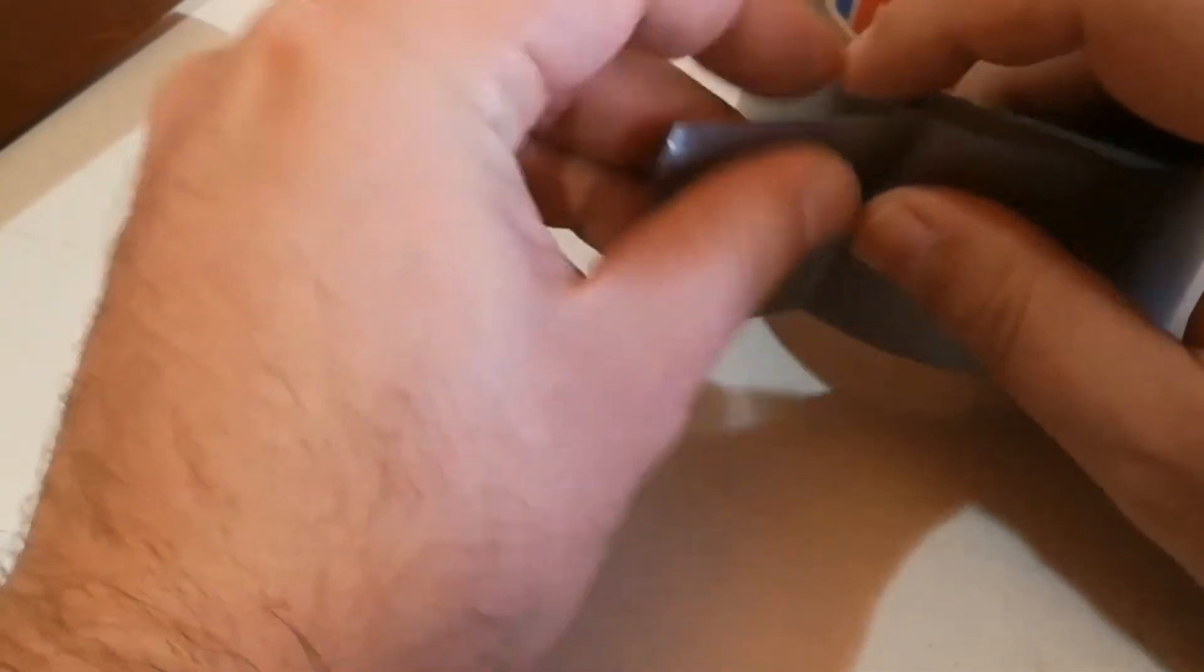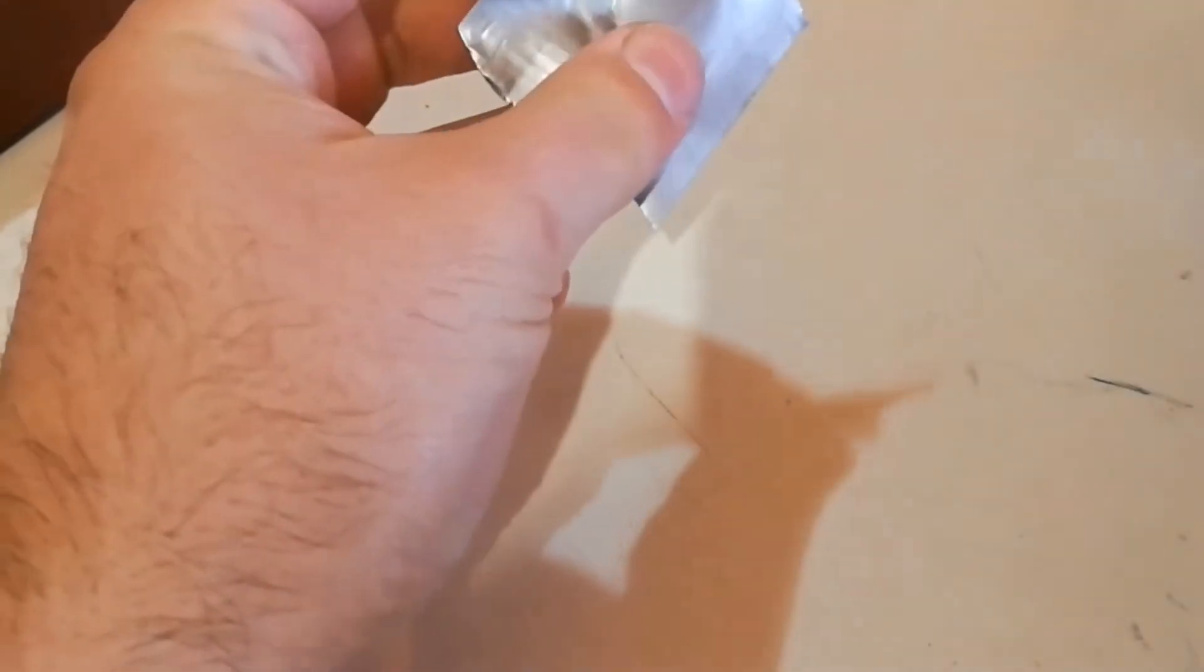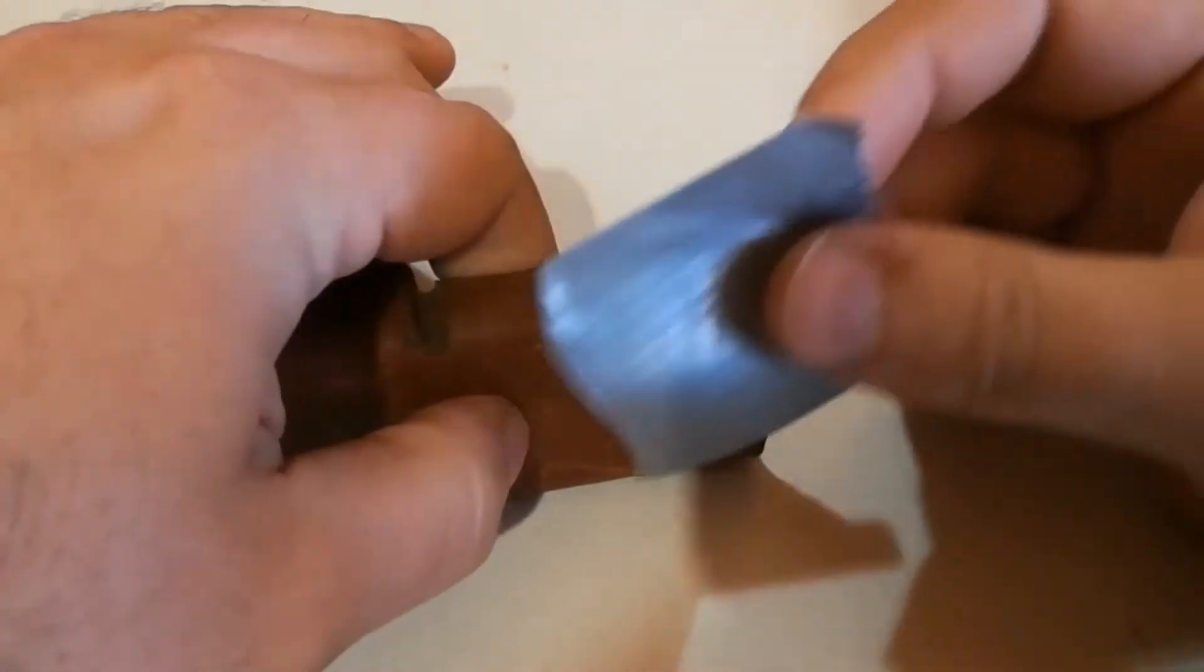Many people use glue or superglue or something like that to prevent the walnut from spinning. But you need to wait for it to be dry.